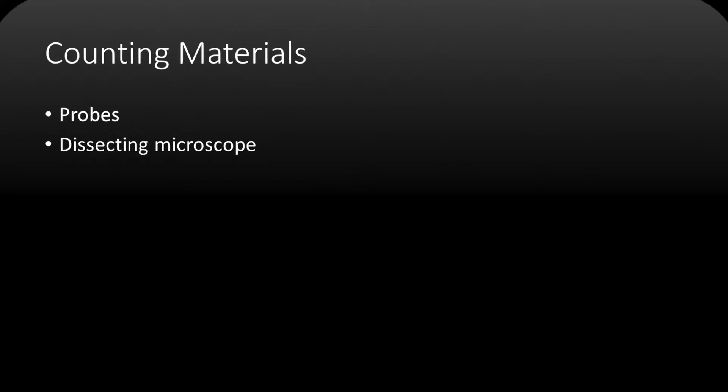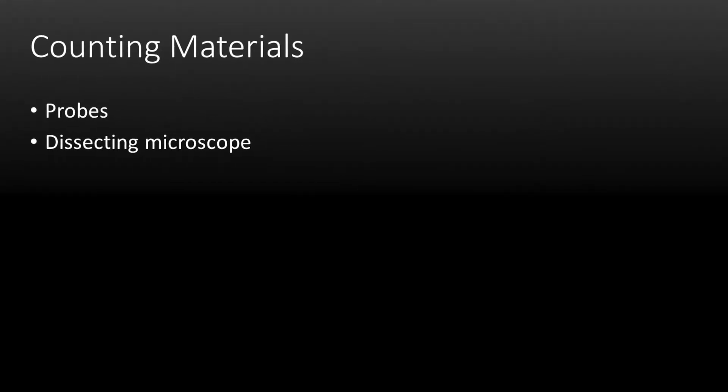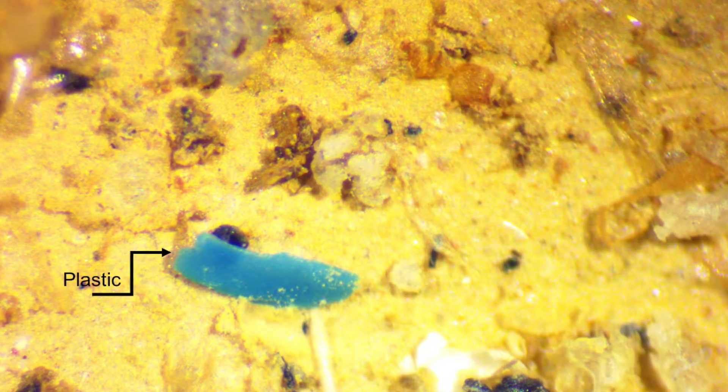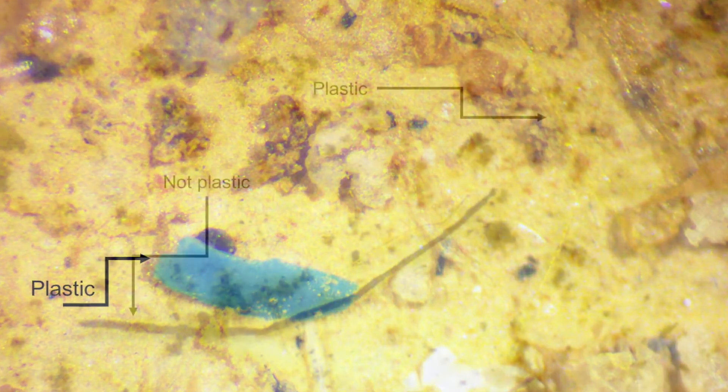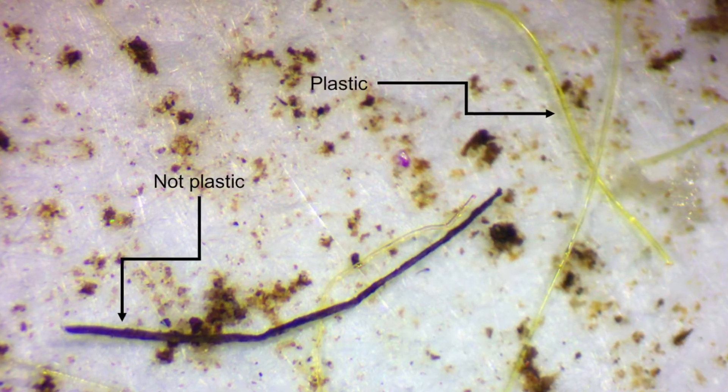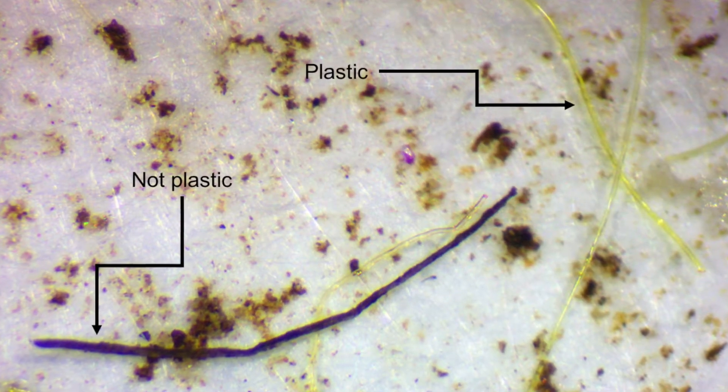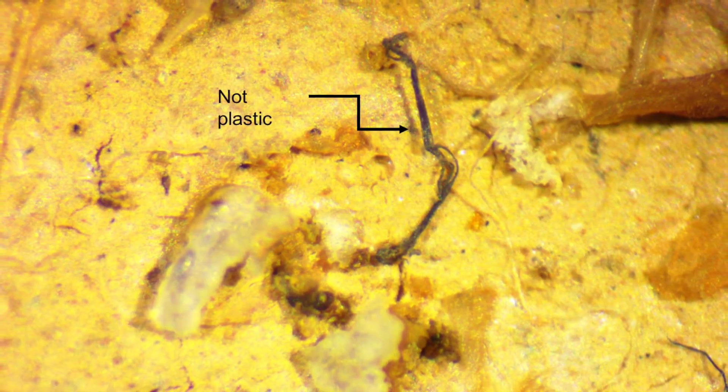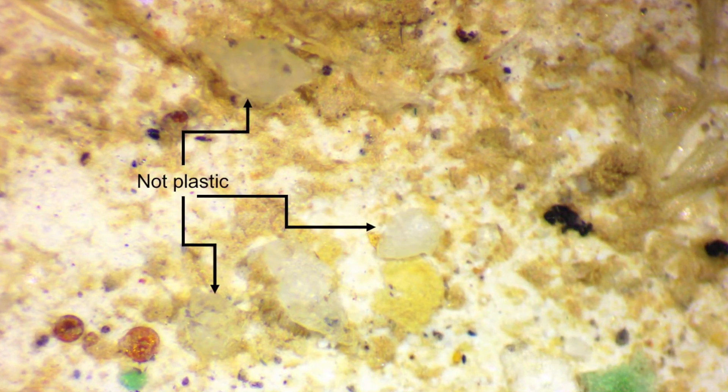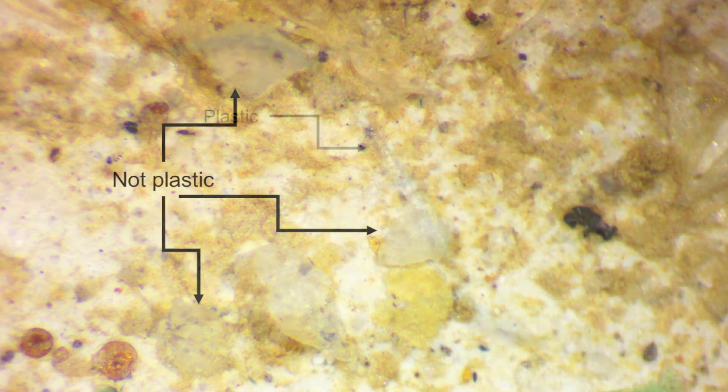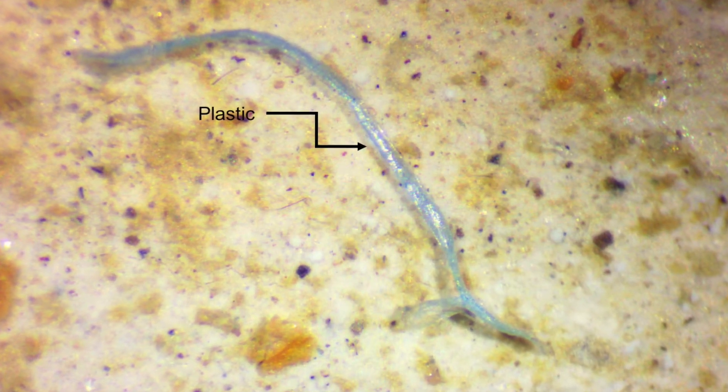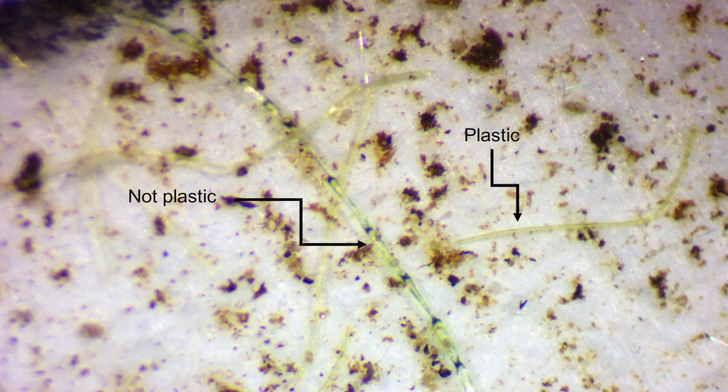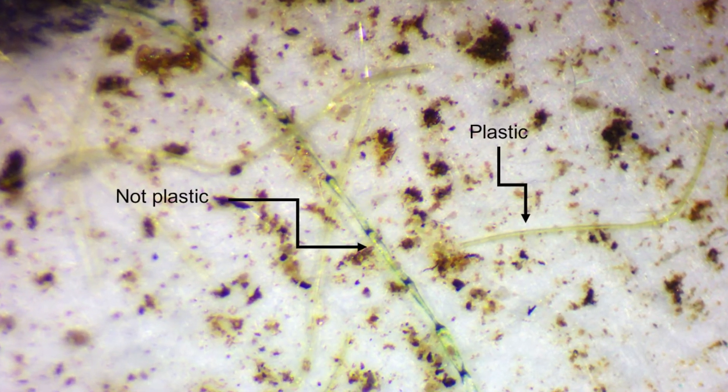For counting, all you need is probes and a dissecting microscope. Plastic identification can be difficult at first, but in practice it becomes simple. Fibers are very common. Microplastic fibers can be identified by their bright colors and smooth appearances with the same thickness throughout. When plastic fibers are prodded with a probe, they may bend, but they don't break. Sand and salt can at times look like fragments of plastic, but when sand particles are prodded, they break and plastic pieces do not. Algae or other plant material can look like plastic, but if cells are visible, then you know that it is not plastic.